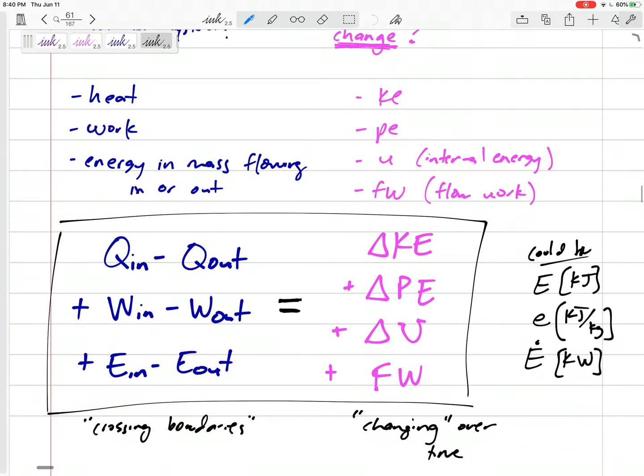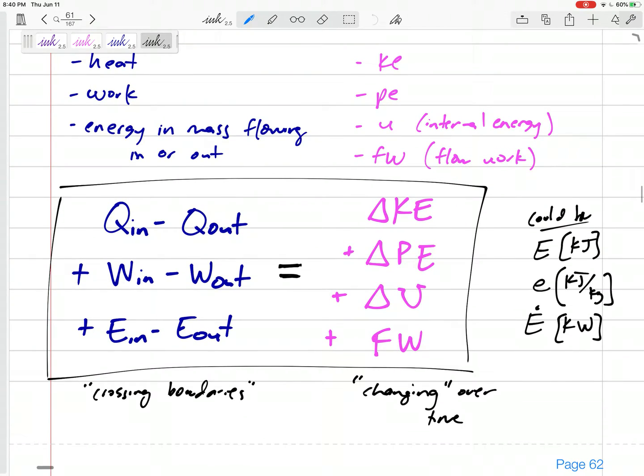So if we want a nice big equation, all the Q (all the heat in and out), all the work in and out, all the energy in the fluid going in and out - everything on the left hand side is crossing boundaries - equals the delta KE, delta PE, delta U, and flow work, all of the stuff that's changing over time.